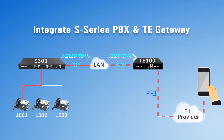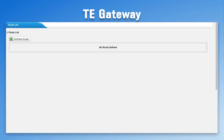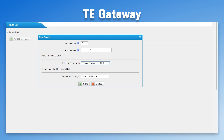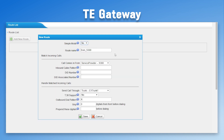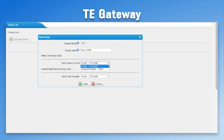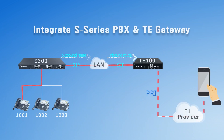Next, turn to the gateway and create an inbound route to direct calls from the PBX to the E1 trunk. Find the route list and add a new route. Enable simple mode — this will allow all incoming calls from the PBX to be sent out through the E1 trunk. The advanced settings, visible when simple mode is disabled, are designed for limiting incoming calls or creating more complicated routes. For most cases, simple mode is enough. Choose yes to allow all calls, set 'call comes in from' to the VoIP trunk we created, and 'send call through' to the E1 trunk. Save and apply all configurations. Now all outgoing calls from the PBX will be sent out through the E1 line.